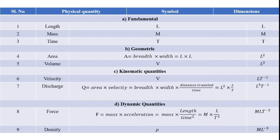Geometrical dimensions are also available. One geometrical physical quantity is area, expressed with the symbol capital A. Area can be derived from breadth into width. Breadth can be expressed as L and width also as capital L, giving L squared as the derived quantity from fundamental quantities.